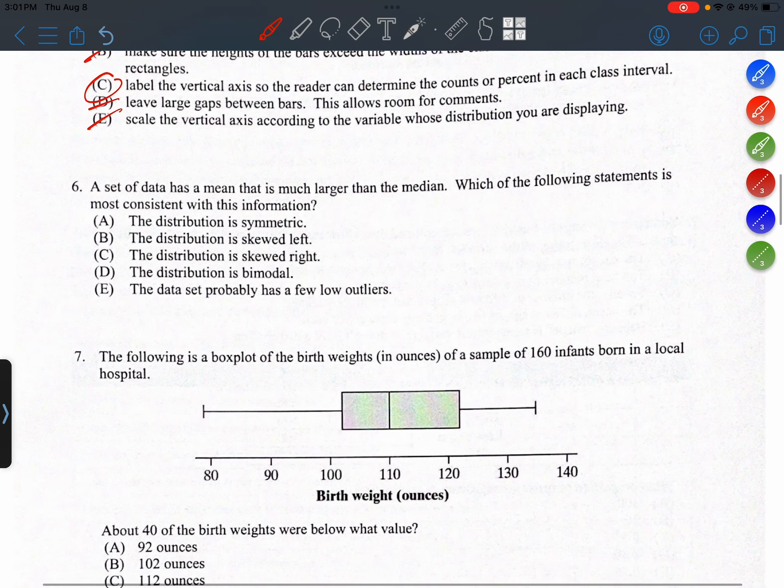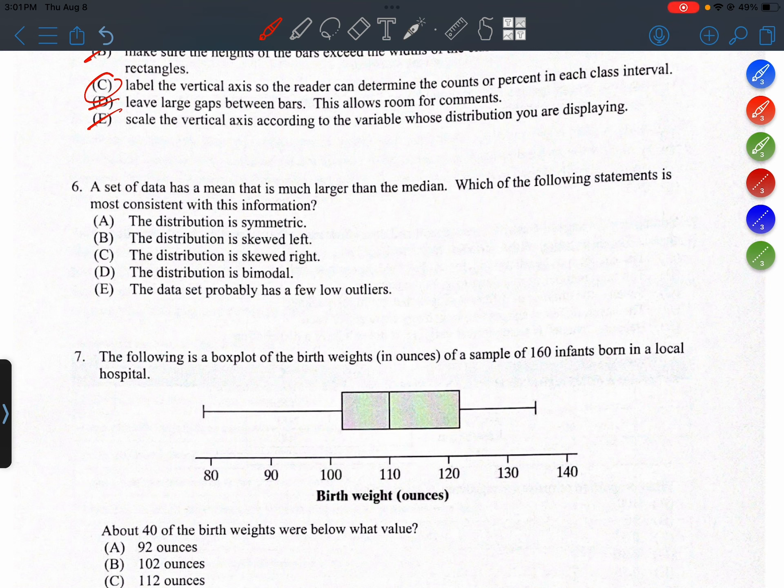Question 6. A set of data has a mean that is much larger than the median. Which of the following statements is most consistent with this information?